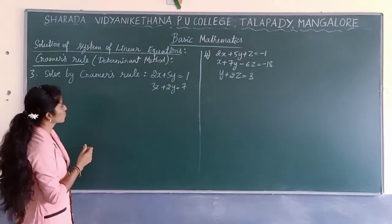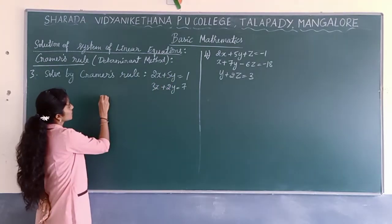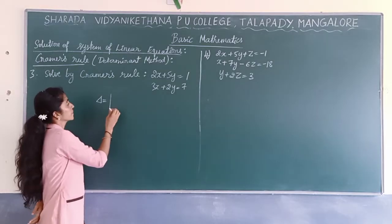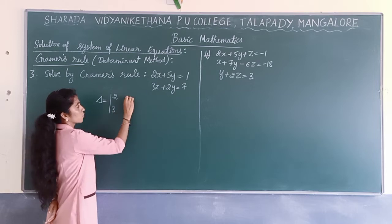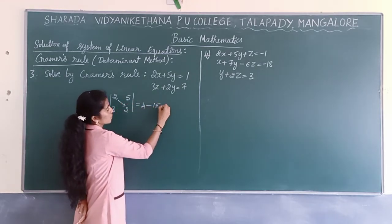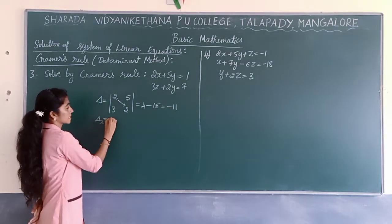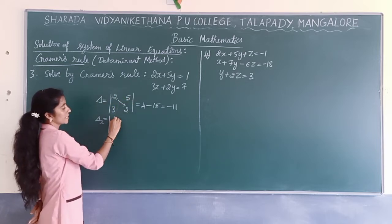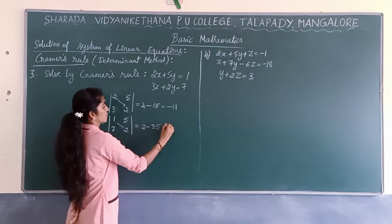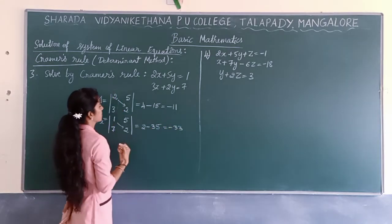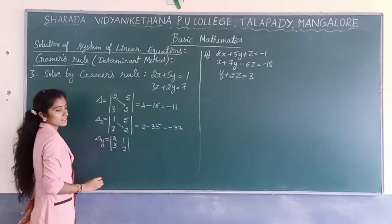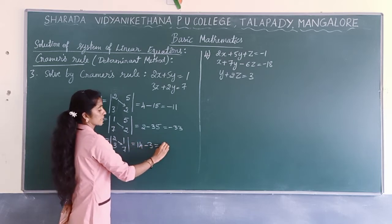Now the third problem using Cramer's rule. Directly write delta with coefficients of x and y. Delta = determinant of the coefficient matrix = 4 - 15 = -11. For delta_X, replace the x-coefficient column with the RHS values 1 and 7: delta_X = 2 - 35 = -33.